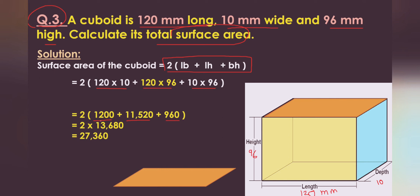We add them: 1,200 + 11,520 + 960 = 13,680, then multiply by 2. So the answer is 27,360 square mm.